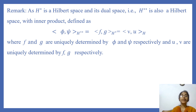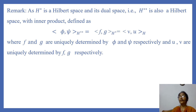As a remark, since H* is a Hilbert space, its dual space H** is also a Hilbert space, with inner product defined as: ⟨ψ, φ⟩ in H** equals ⟨F, G⟩ in H* equals ⟨V, U⟩ in H, where F and G are uniquely determined by φ and ψ respectively, and U and V are uniquely determined by F and G respectively.